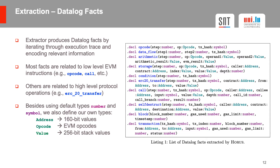The extractor produces datalog facts by iterating through the execution trace and encoding relevant information. Most facts are related to low-level EVM instructions such as opcode and call, while others are related to more high-level protocol operations such as ERC20 token transfers. We use the default type number to encode integer values smaller than 64-bit and the default type symbol to encode long sequences of bytes. We also define our own types: address to encode 160-bit account addresses, opcode to encode EVM opcode names, and value to encode 256-bit stack values.